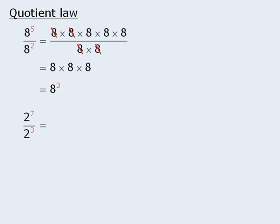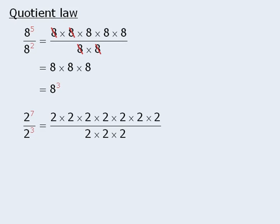Now consider this example. Let's first rewrite the numerator, and then rewrite the denominator. When we eliminate 3 twos from the top and the bottom, we get the product of 4 twos, which is equal to 2 to the power of 4. So 2 to the power of 7 divided by 2 to the power of 3 is equal to 2 to the power of 4.